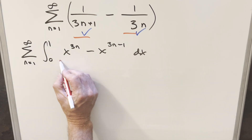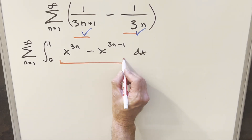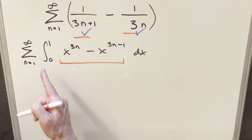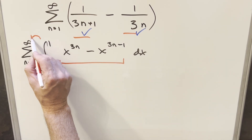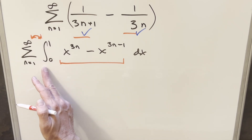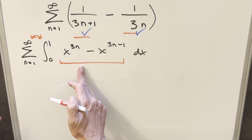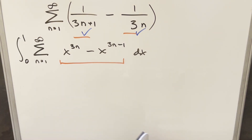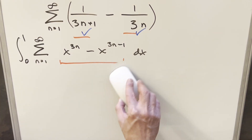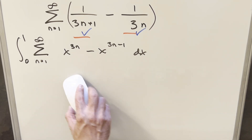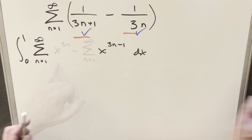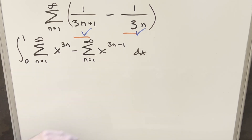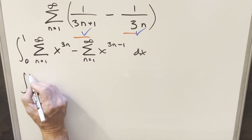At this point, I don't want to just integrate directly, because we'd just get back what we started with. Instead, what we can do is swap the integral and the summation. Then we can treat the inside as a sum and simplify from there. I want to write this as two separate sums so we can evaluate them separately.